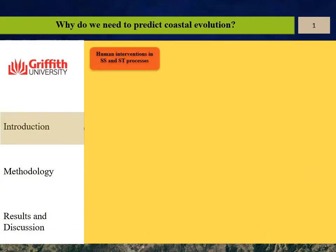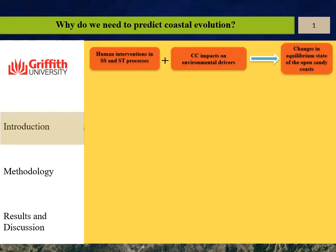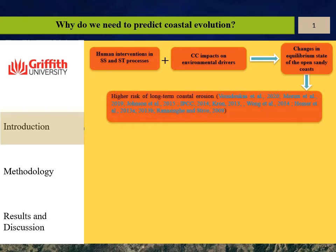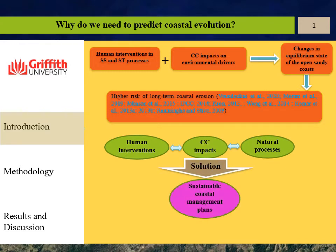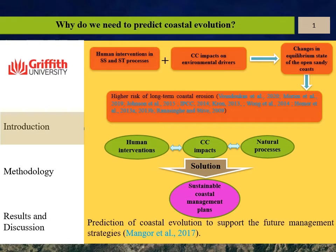It is believed that human interventions in sediment supply and sediment transport processes, together with climate change impacts on environmental drivers, could lead to changes in the equilibrium state of open sandy coasts that could increase the risk of long-term coastal erosion. To make a balance between natural processes, human interventions, and climate change impacts, we need sustainable coastal management plans, and to support those plans we need to predict coastal evolution.